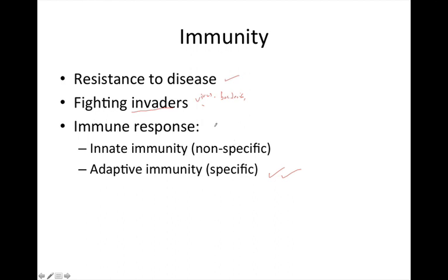When an invader breaches our primary defenses, there are two major types of immune responses or defense mechanisms. There's innate immunity, which we refer to as nonspecific immunity, and adaptive immunity, which is specific. Innate immunity includes physiologic containment responses like inflammation, phagocytosis, fever, and interferon — built-in mechanisms more responsive to tissue damage and chemical mediators. Specific immunity is a response to a particular molecule called an antigen, which we'll talk about in a minute.